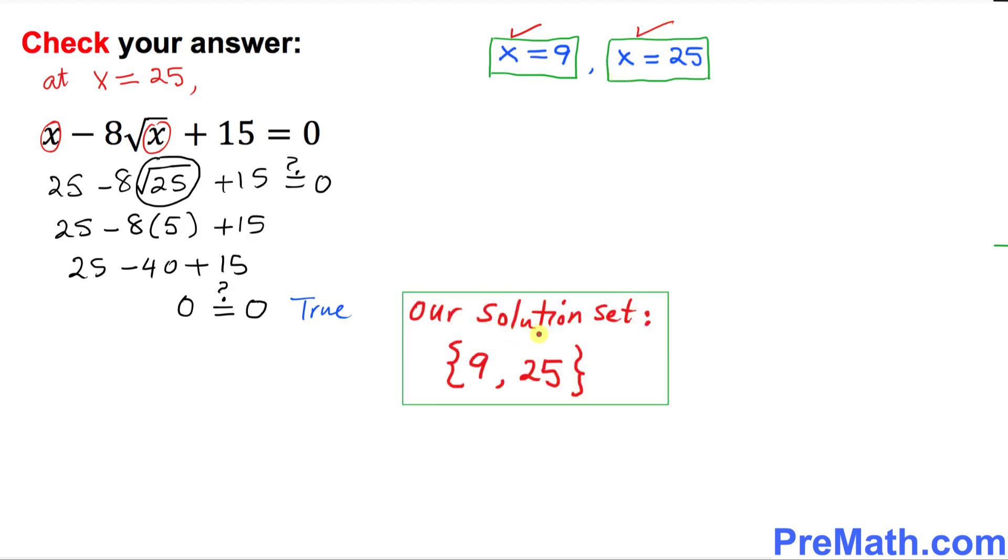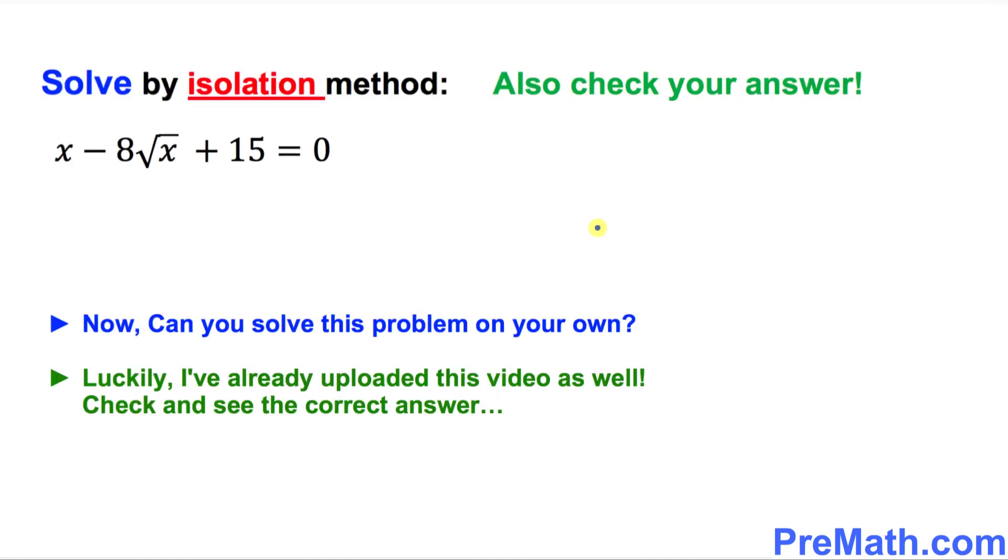Thus, our solution set turns out to be 9 and 25. And finally, here is your assignment. Can you do the very same radical equation by isolation method? You can take your time. You can pause the video. Luckily, I have already uploaded this video as well. Please go ahead and check it out and see the correct answer.